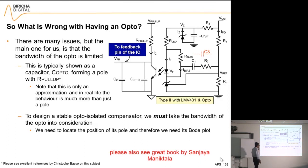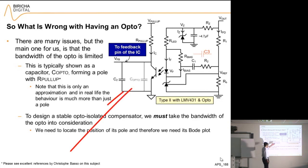Therefore, we must take the bandwidth of the opto into consideration. You cannot make a power supply with a bandwidth of 10 kilohertz if your opto is cutting off at five. In order to do that, you need to locate the position of this pole, and therefore you need its Bode plot.